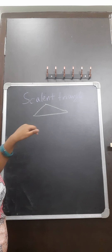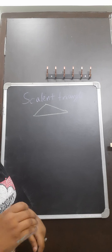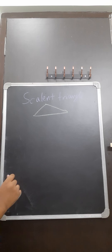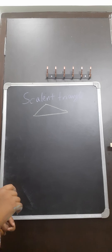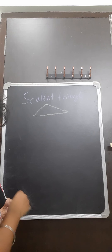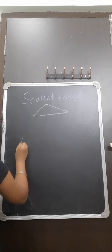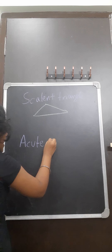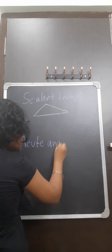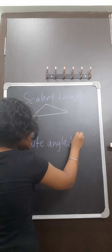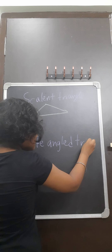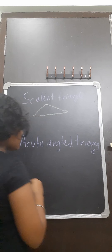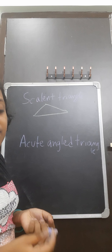Next, Scalene Triangle. All the sides of this triangle are not equal in measure. So all the sides of this triangle are different in measure. The measure of these are not equal.